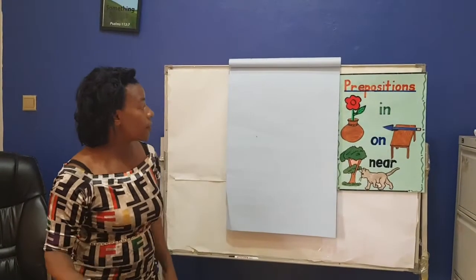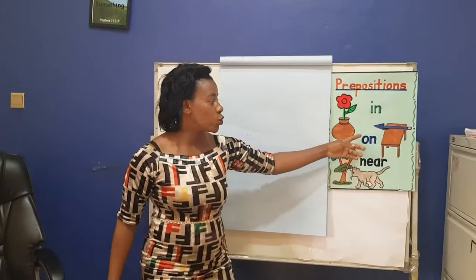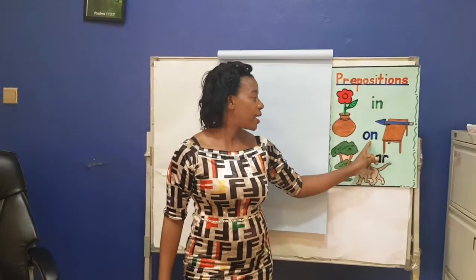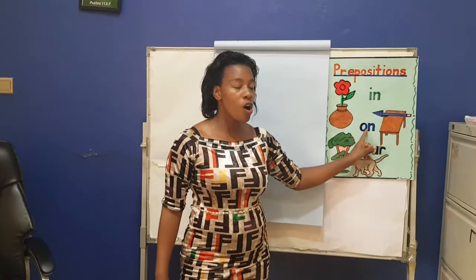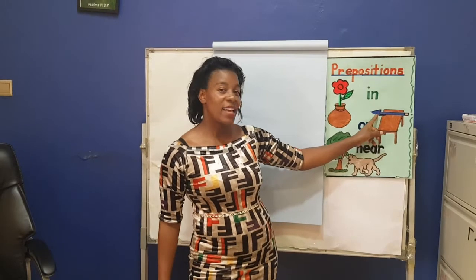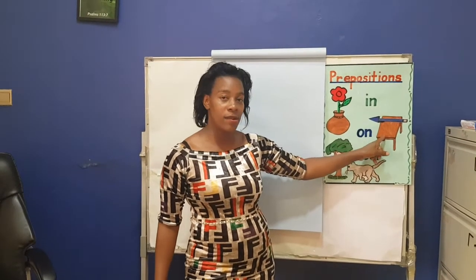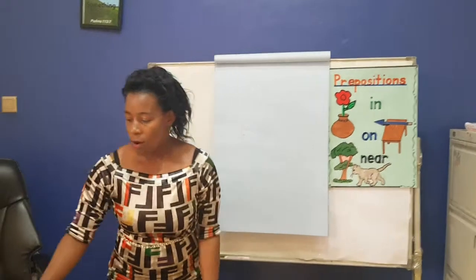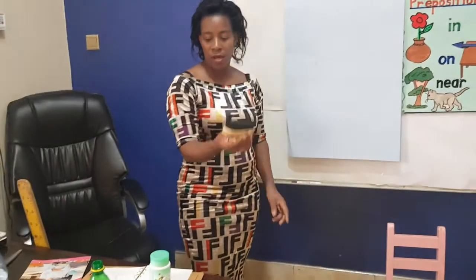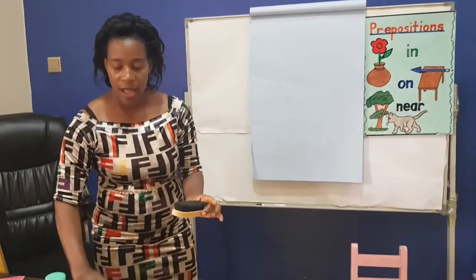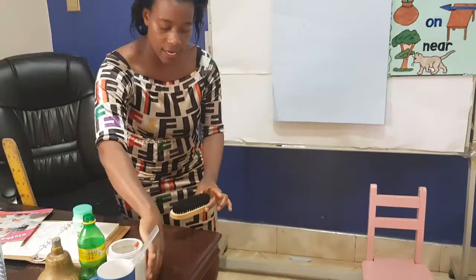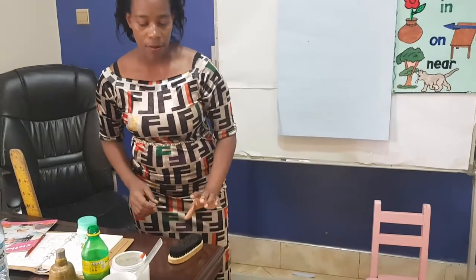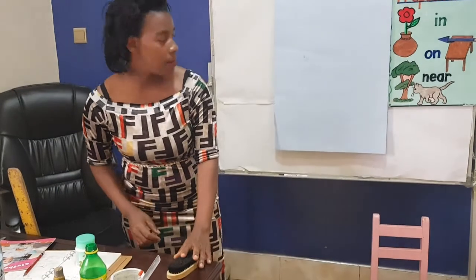Having looked at in, then we go to on. Say it with me — on. Where is the pen? The pen is on the table. I have a brush and my brush is here. I have a table. Where is the brush? The brush is on the table.